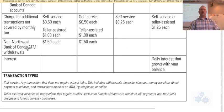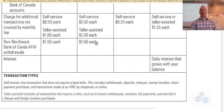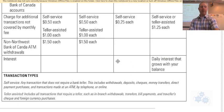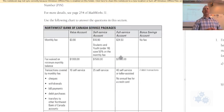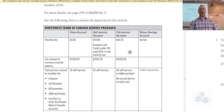If you use an ATM that's not part of this bank, there will be an extra $1.50 charge for those two accounts, but not for the others. And for the savings account, daily interest grows with your balance. Those are the different fees and options for the different account types at this bank.